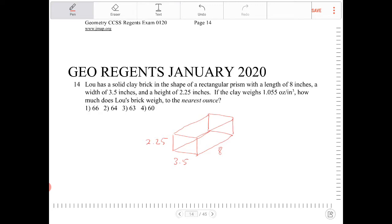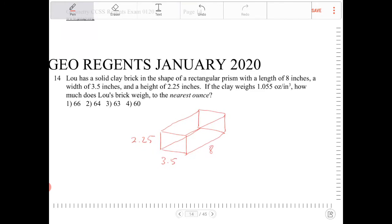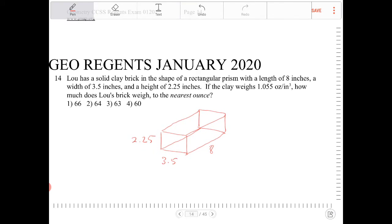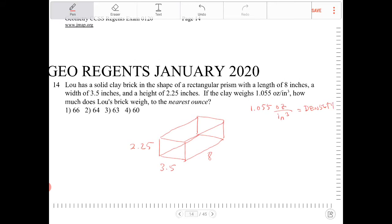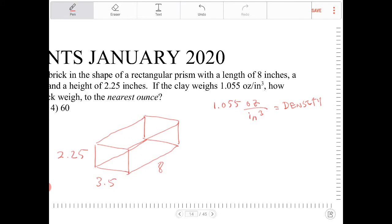If the clay weighs 1.055 ounce per inches cube. So 1.055 ounce per inches cube. This is otherwise known as the density. This is the density.